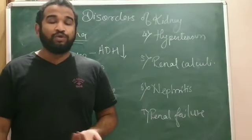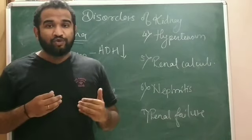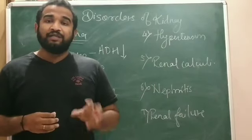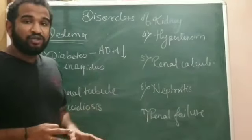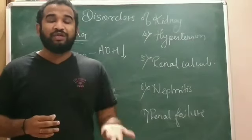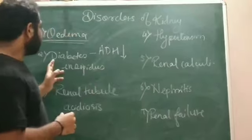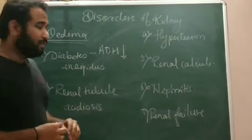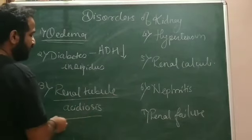When there is a deficiency of anti-diuretic hormone, water will not be reabsorbed. When water is not reabsorbed, it is lost from the urine, causing dehydration. More and more water is lost, and more and more urine is excreted by the individual — that condition is called diabetes insipidus.